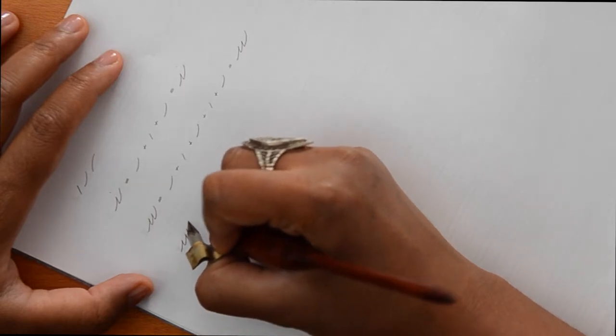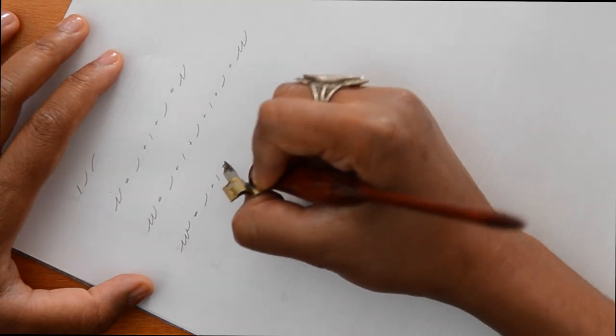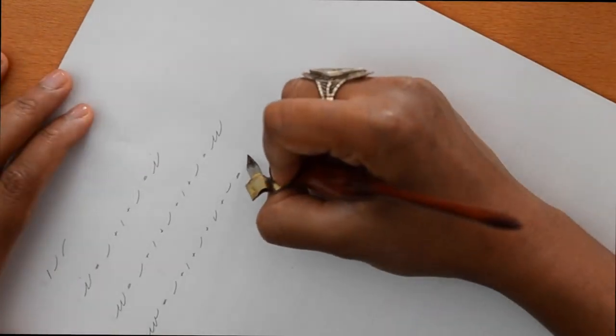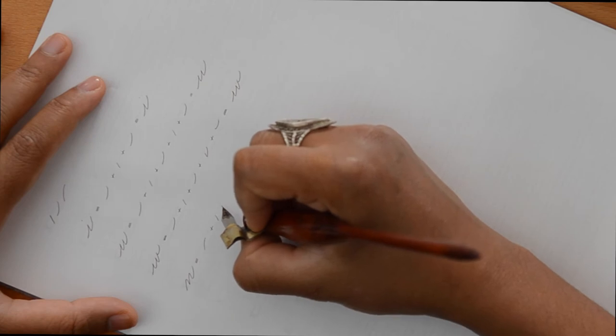For the W we begin it in much the same way as the U except the last turn is slightly narrower and ends with a small tail. Notice that the N is just a U upside down.